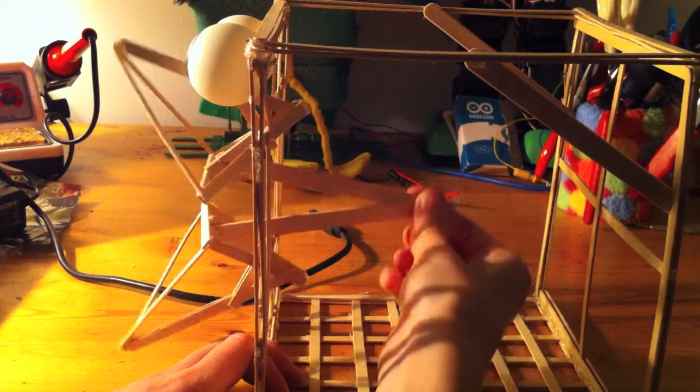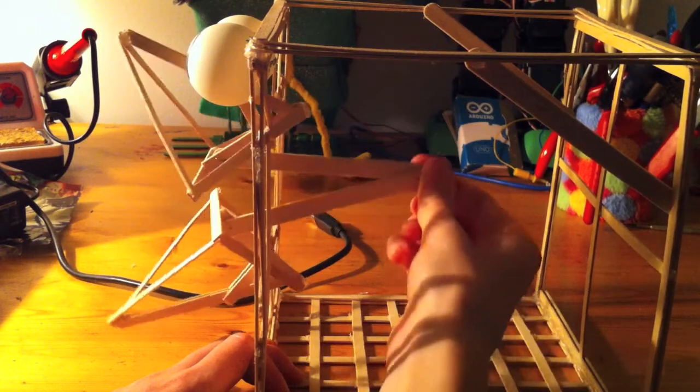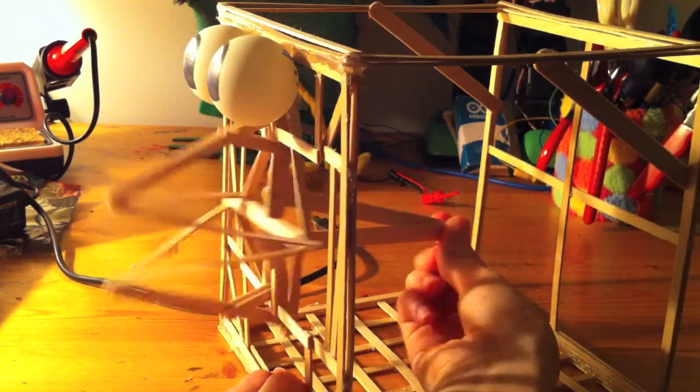So to sum up, RoboBird's beak mechanism translates rotational movement into linear movement to push the beak open and pull the beak close to an overbite or underbite position.